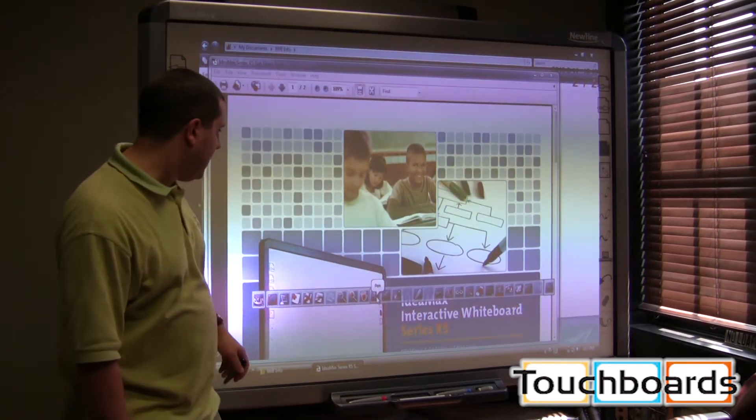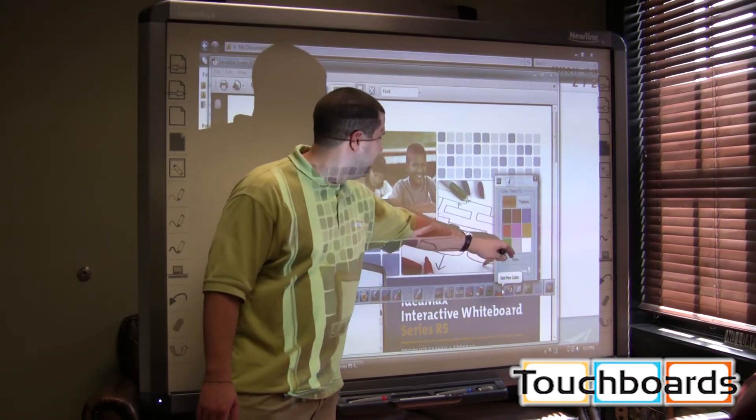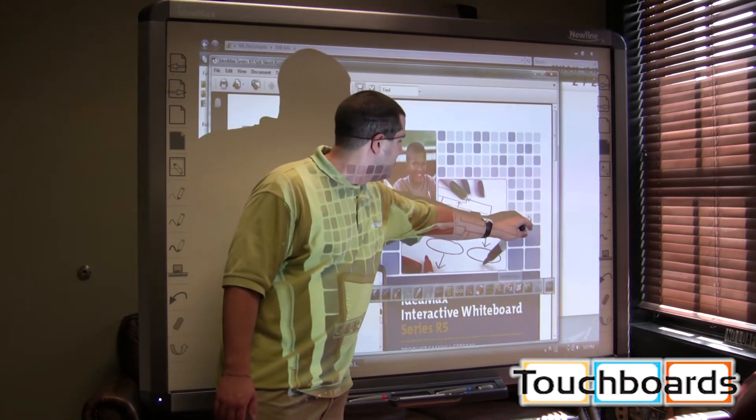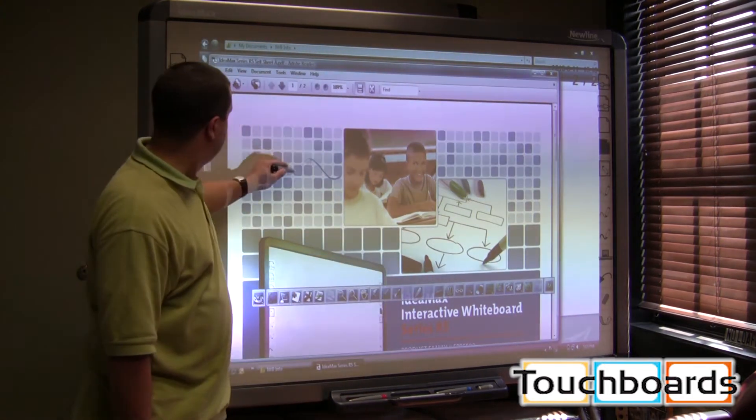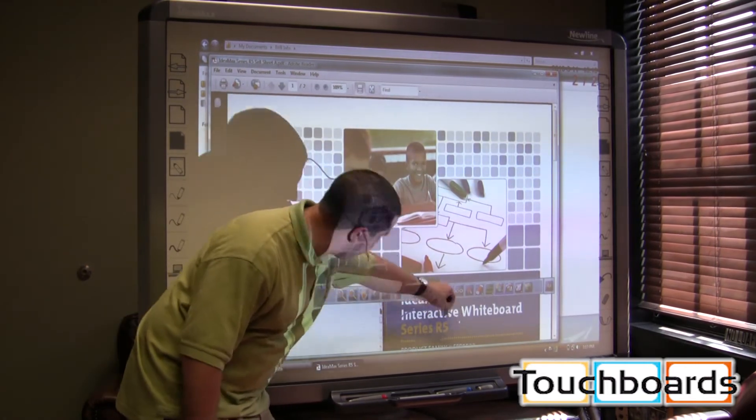The pen here. And we can change colors on the pen. It comes up as red, but let's say we want to write in blue. We can write in blue. I can circle this here, this series R5.